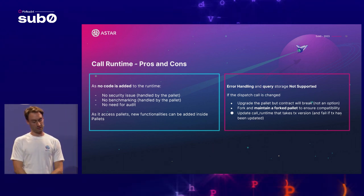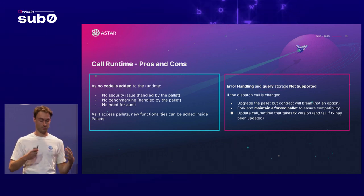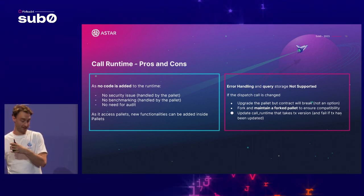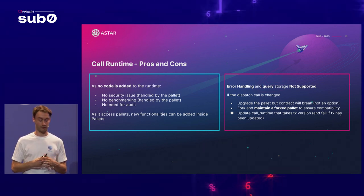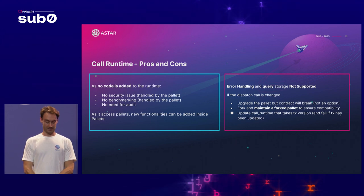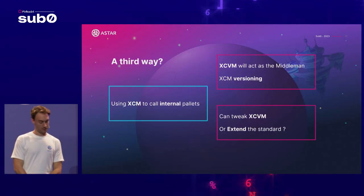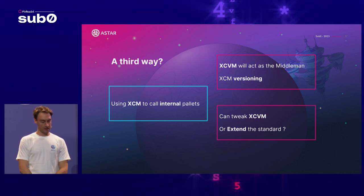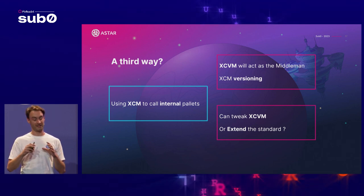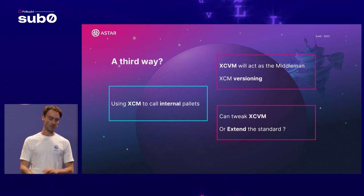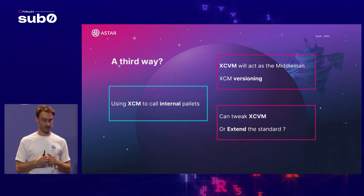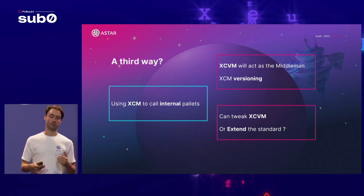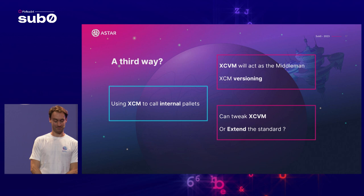One solution being considered by Parity is to update the call runtime host function to take a transaction version, so that if a dispatchable on the pallet side gets updated, the version is bumped and an error is returned instead of a panic — essentially a fail-safe. More recently, there has been discussion about a third approach: using XCM to call internal pallets. In this approach, the XCM virtual machine acts as a middleman, similar to chain extension. XCM is already versioned, which is really nice, though for some innovative use cases XCVM may need to be tweaked, and it may also be possible to extend the XCM standard for this.